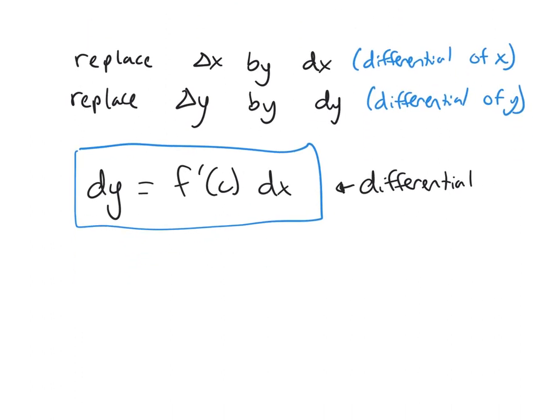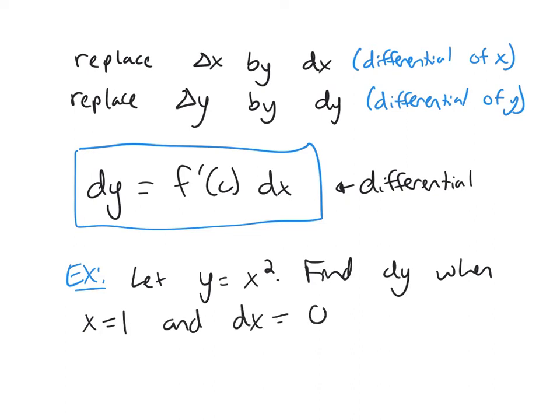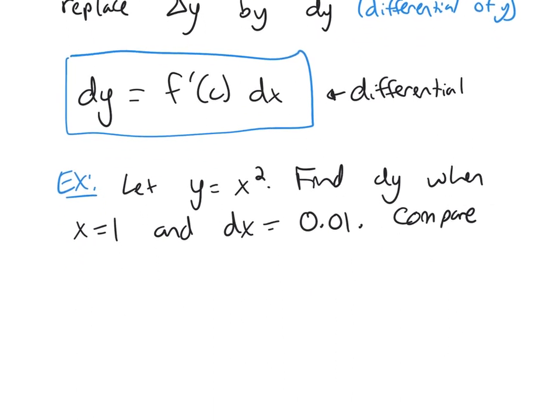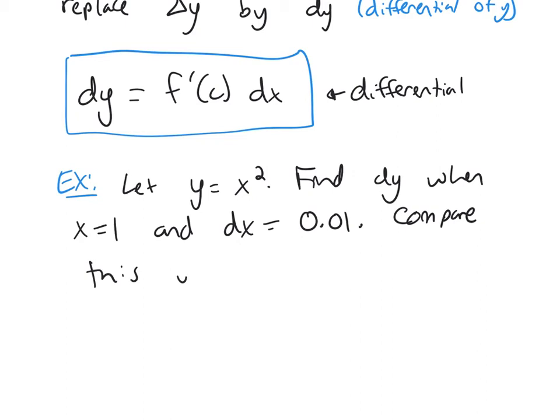All right, so let's look at an example. Let's let y equal x squared, and I want to find dy when x equals 1 and dx equals 0.01. And then I also want to compare this value with delta y for x equals 1 and delta x equals 0.01.